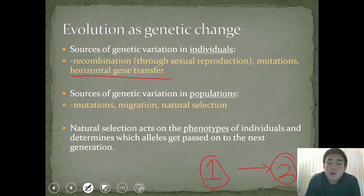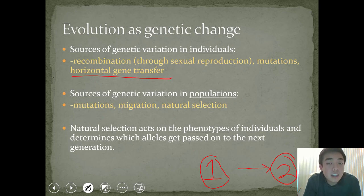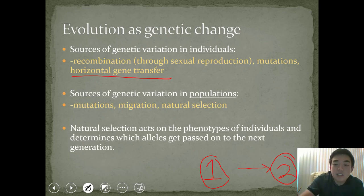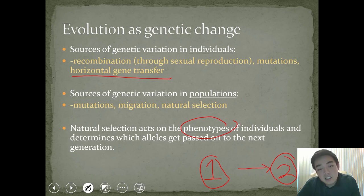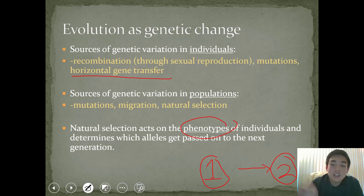Sources of genetic variation in populations include mutations, migration — both immigration and emigration — as well as natural selection. Natural selection acts on the phenotypes of individuals, meaning the physical traits we observe, which determines whether those traits are advantageous or disadvantageous, and thus what alleles get passed on to the next generation.